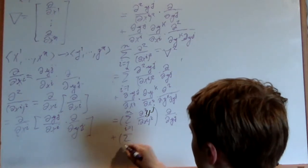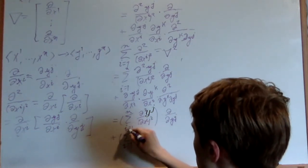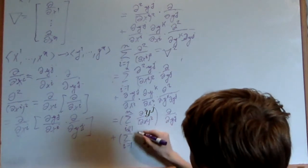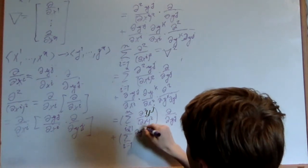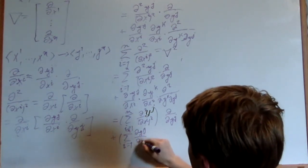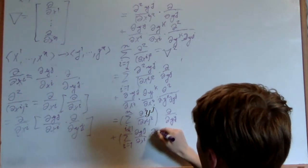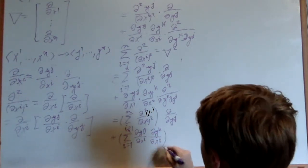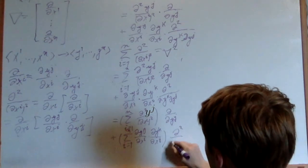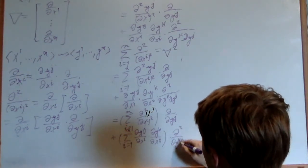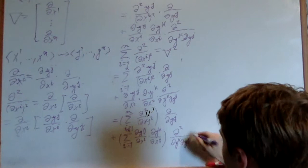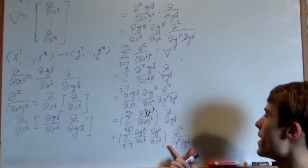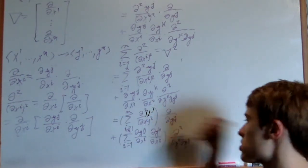And then plus, I'm going to have the sum from i equals 1 to n of del yj on del xi times del yk on del xi, and multiply it by del squared on del yk del yj, because these don't depend on i. It doesn't affect the sum. Just distribute it out.